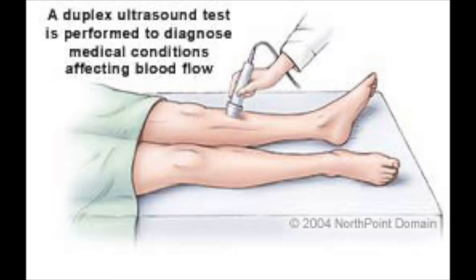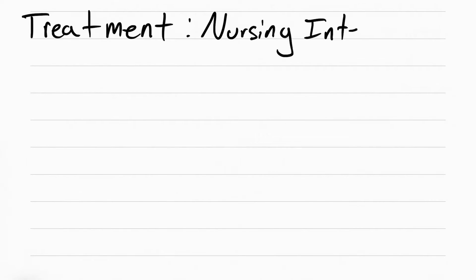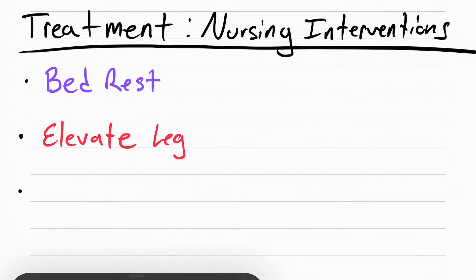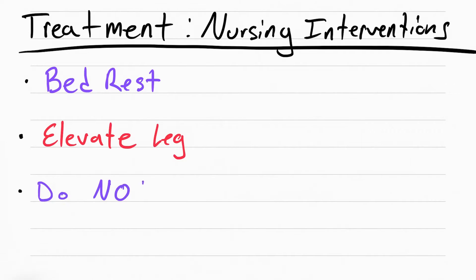What you want to do for the patient if they have a DVT is put them on bed rest, elevate the legs above heart level, and don't massage the leg. This can cause dislodgement of the clot that can lead to a pulmonary embolism.